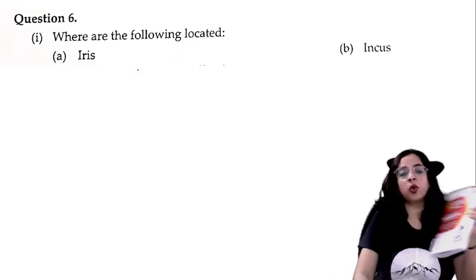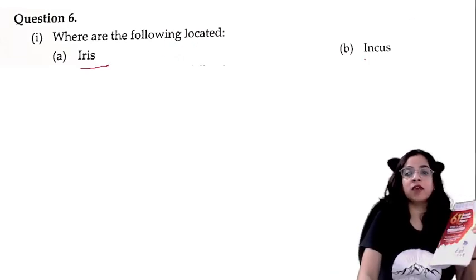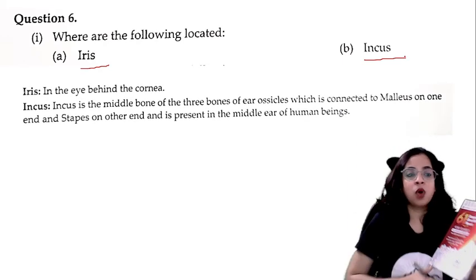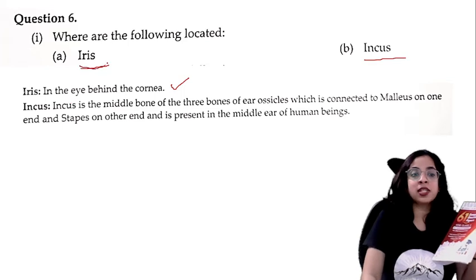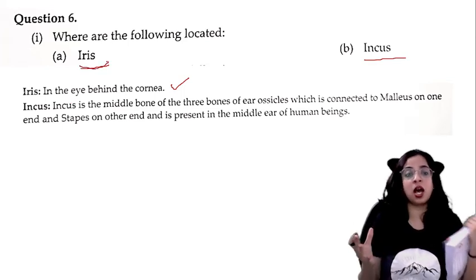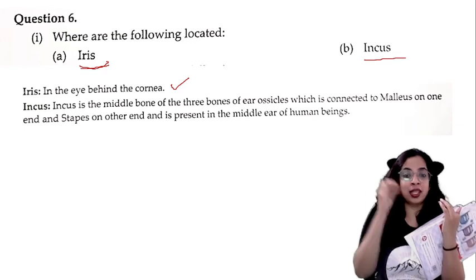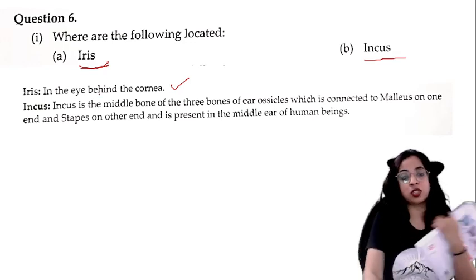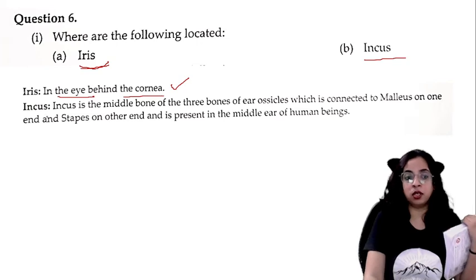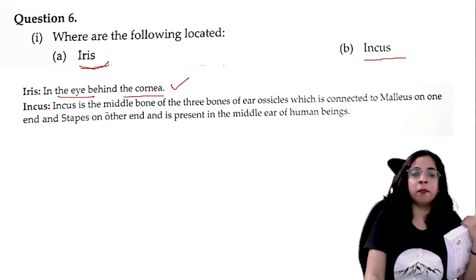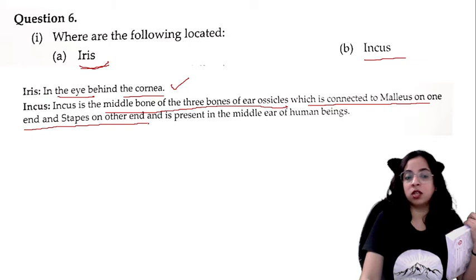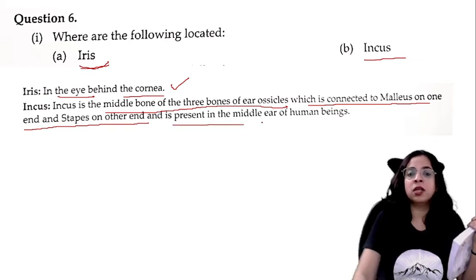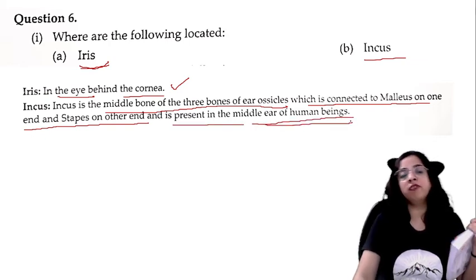Where are the following located? Iris is located in the eye, behind the cornea. Incus is the middle bone of the three ossicles of the ear; it is connected to the malleus on one end and stapes on the other end, and is present in the middle ear. Always give the broader location first, then the exact position.